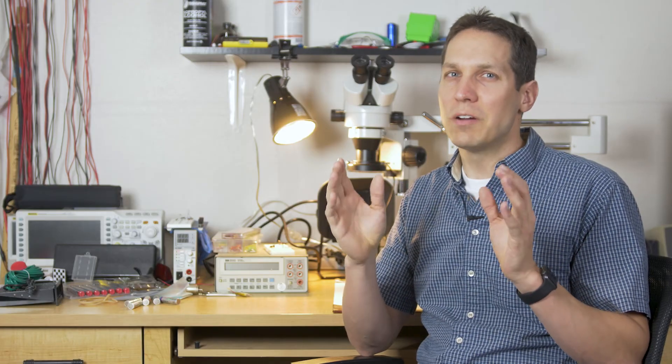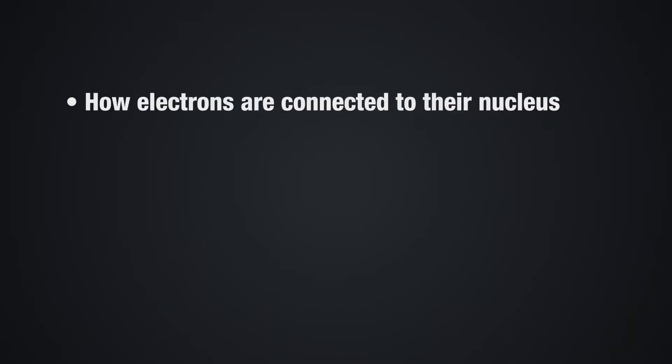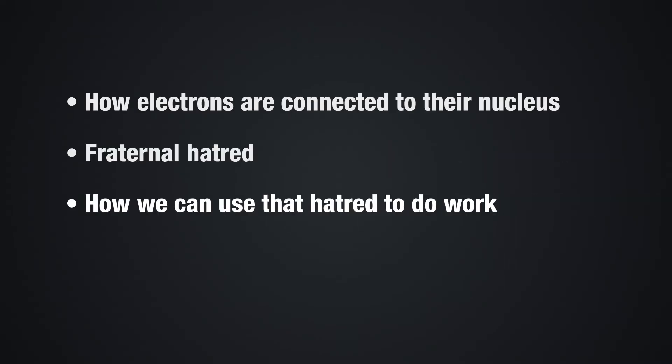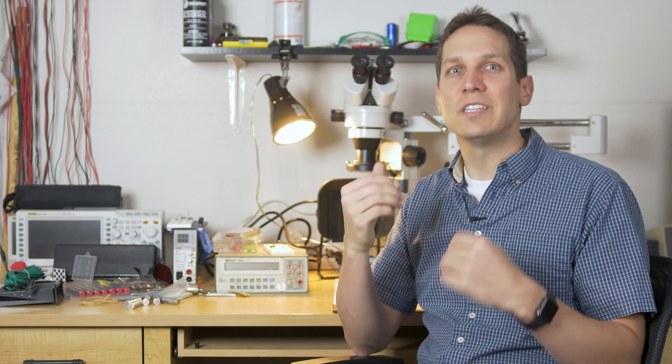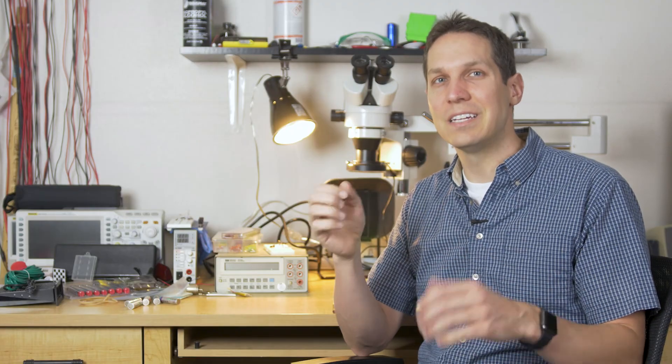So we've covered a lot in this video: how electrons are connected to their nucleus, their fraternal hatred, and how we can use that hatred to do work, and how electrons flow opposite from the current. If you have any questions, leave it in the comments below, and if you found this interesting or helpful, please subscribe to our channel and like this video.